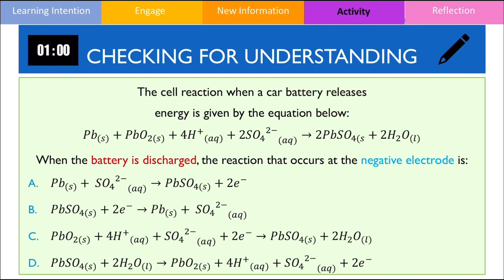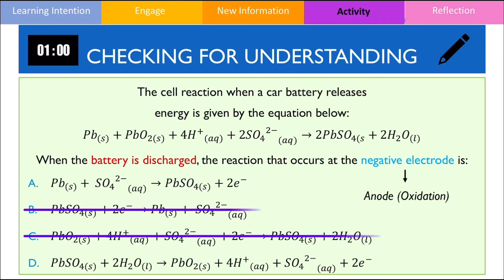Please pause the video and have a go with this question. We want to identify what reaction is occurring at the negative electrode as the cell is discharging. We know that the negative electrode when the cell is discharging is the anode, so therefore oxidation takes place. Because oxidation is taking place, electrons are being lost, so we can eliminate the two half equations where electrons are gained. The next step is to compare oxidation numbers — comparing the oxidation number of lead in the reactants and products. Lead has an oxidation number of zero in the reactants, whereas in the products it has an oxidation number of positive 2. As a result, A is the correct answer because lead is being oxidised.